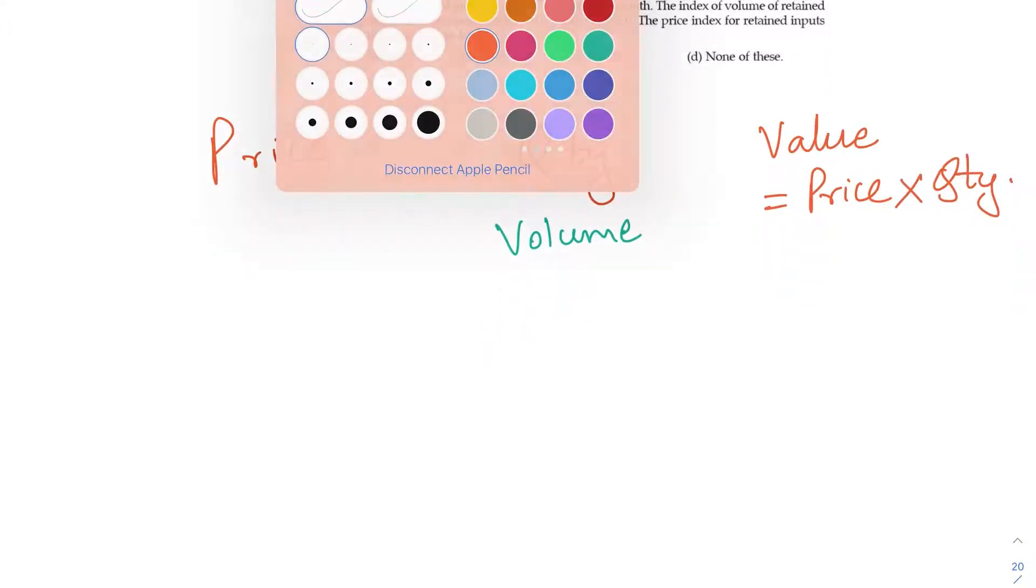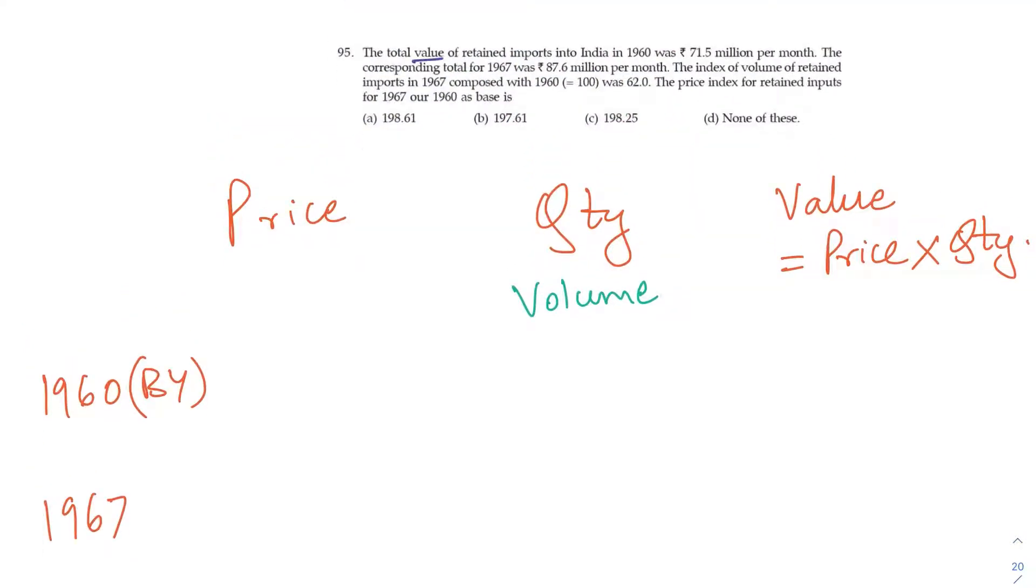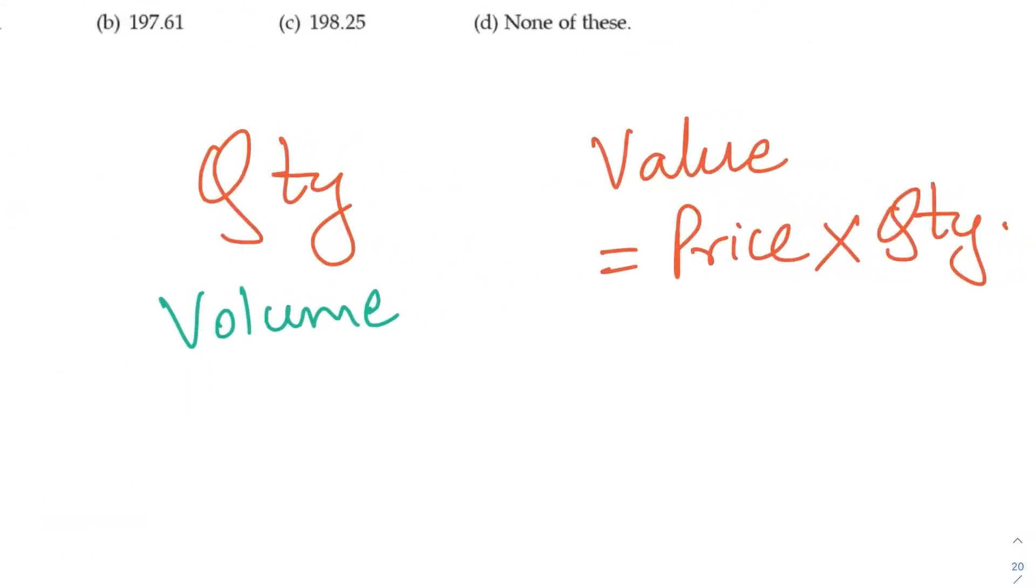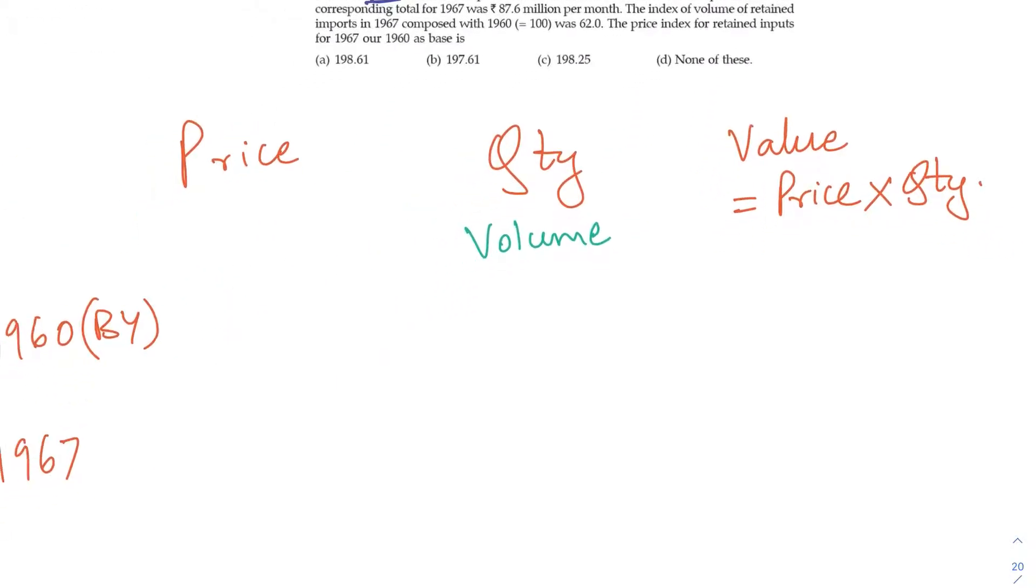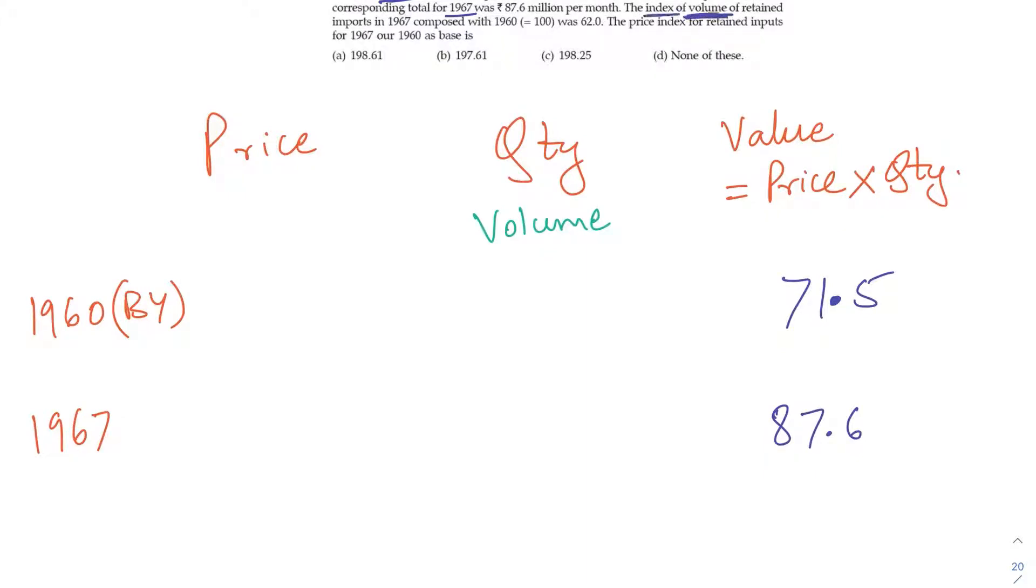Another word you have used is quantity, which we can say as volume also. You have to take care of this. Then now you have to see that there is 1960 which is the base year, and then there is 1967 which is being compared. Now let us see the numbers here. Value means total value or expenditure. How much it was in 1960? 1967, how much was it? 87.6, not volume, sorry—value, expenditure. How much the expenditure was: ₹87.6.